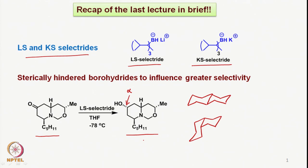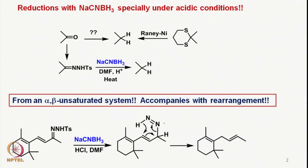It is not only the steric hindrance that we need to see — we also have to consider it in conjunction with the conformation of the molecule. Because in that case, the C5H11 group as well as the methyl group were both equatorially oriented, and thus the reduction is guided by the conformation of such molecules.